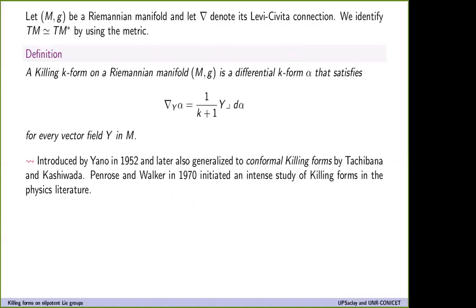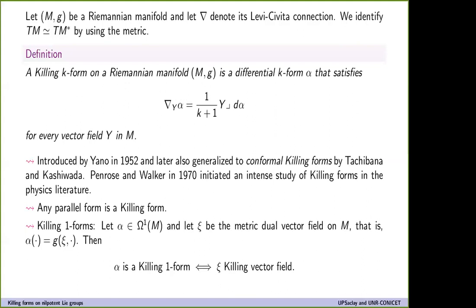Killing forms were later generalized as conformal killing forms. In the seventies, they started to be considered in physics, mostly because they are related to first integrals of the geodesic flow. One trivial observation is that any parallel form on a Riemannian manifold is a killing form because they are closed. Also, killing one-forms generalize killing vector fields: a differential one-form is a killing form if and only if its metric dual vector field is a killing vector field.